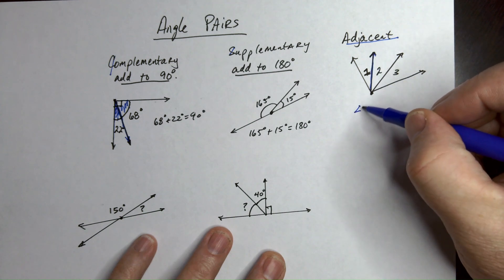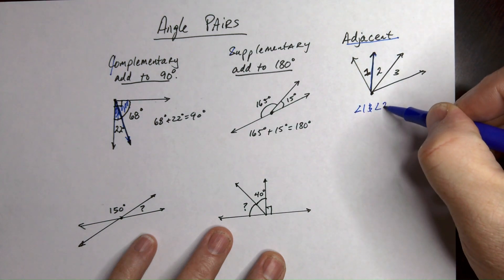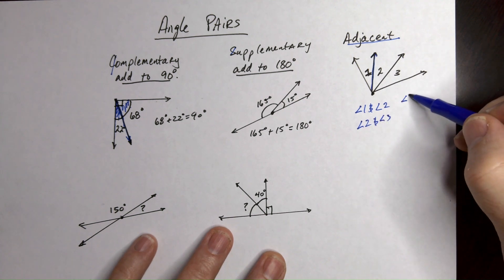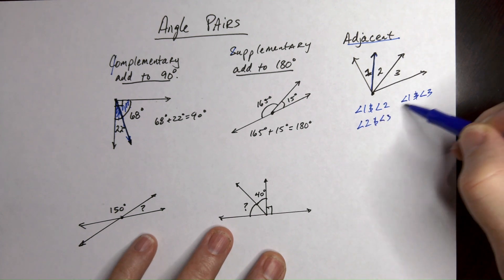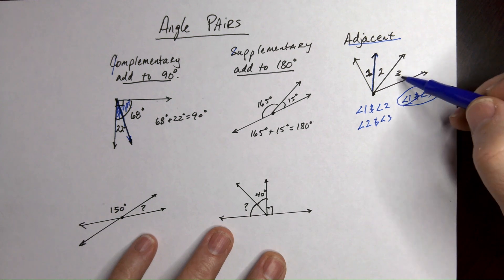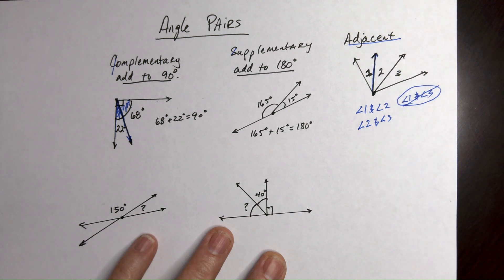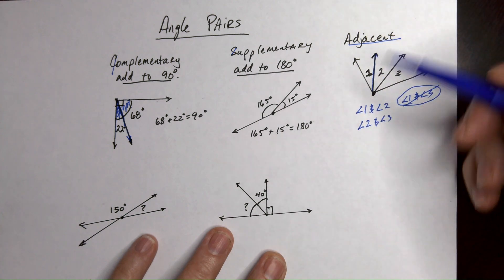So angle one and angle two are adjacent right here and angle two and angle three are adjacent but angle one and angle three, they're not adjacent. They don't share a common leg. They do have the same vertex but they don't have the same side. So those are not adjacent.